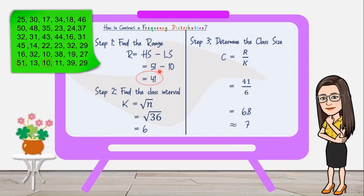Step 2: Find the class interval. To find the class interval, we use the formula K equals square root of n. K stands for the class interval, and n is the number of observations. The number of observations is stated in the problem, which is 36 grade 7 students, so 36 is the n value. If the number of observations is not stated in the problem, you need to count the number of scores. Substituting into the formula, we have the square root of 36, which equals 6.